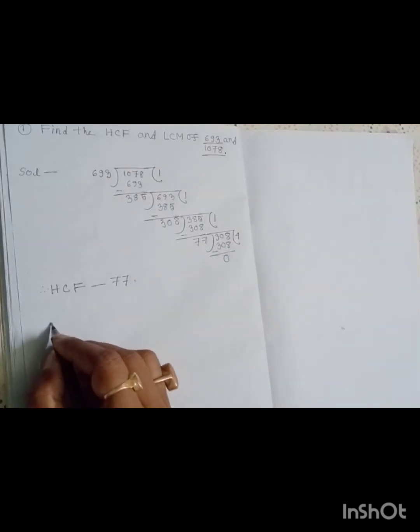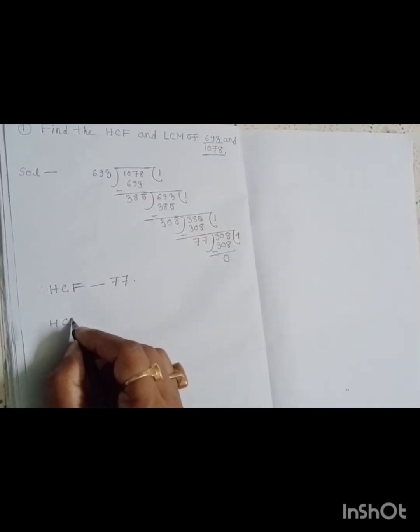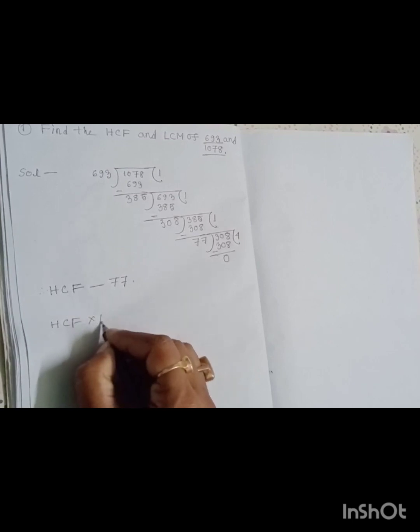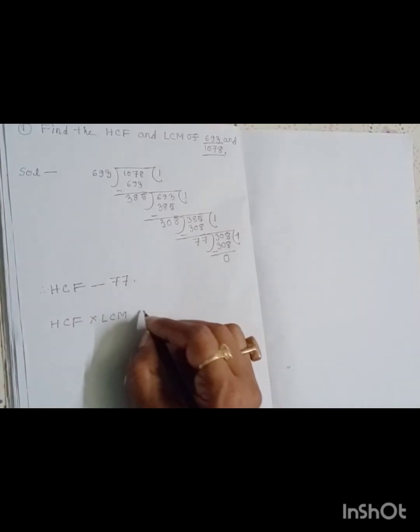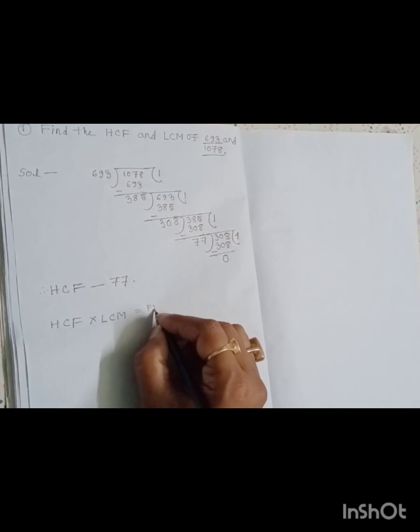Now we have to find the LCM. To find the LCM, we apply the formula: HCF × LCM = product of two numbers.